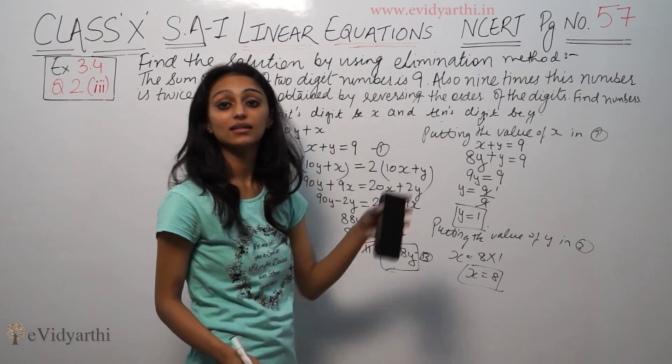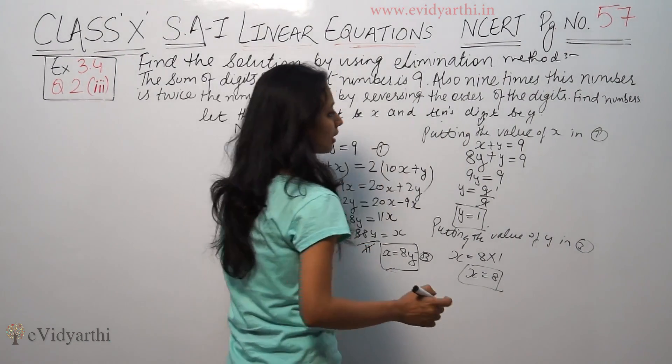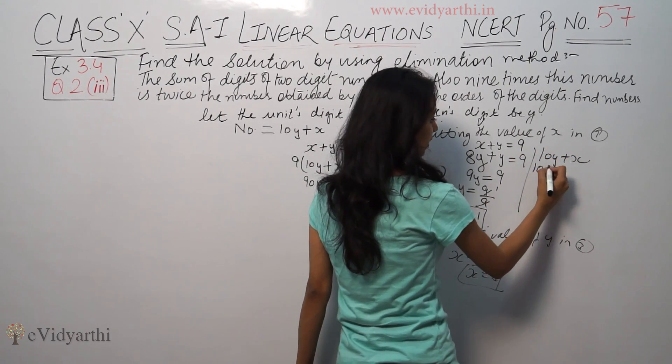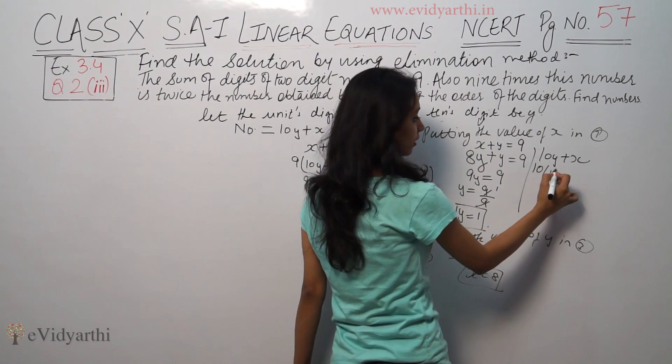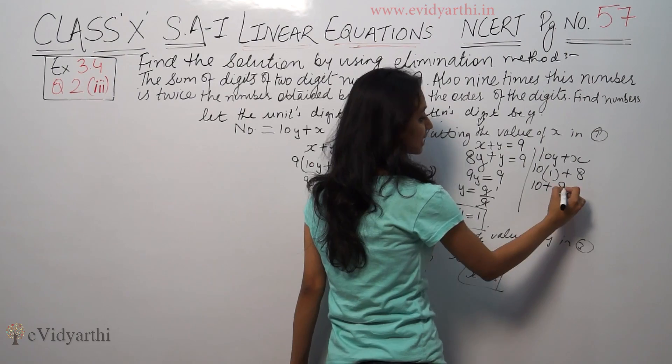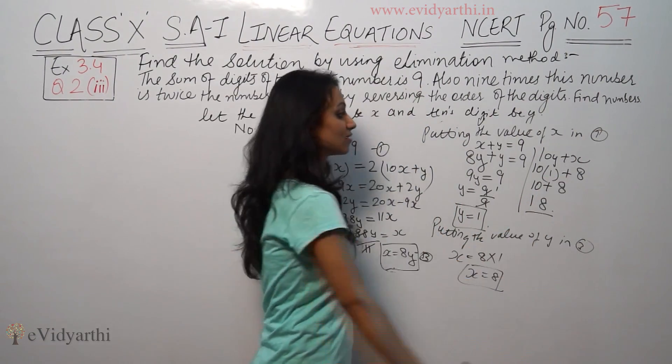At last, we have to find the number. The number we have is 10y plus x. So, 10 times y value which is 1, plus x value which is 8. So 10 times 1 is 10 plus 8. So this is 18. 18 is the number.